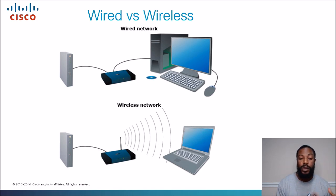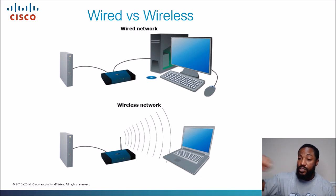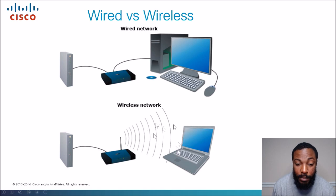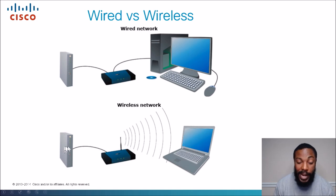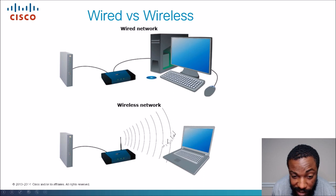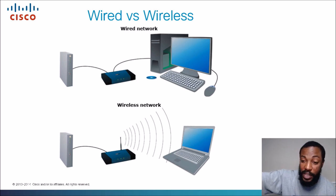A wired network has all of the data passed through physical cables, wires, and Ethernet. In wireless, all of the data is traveling through electromagnetic signals or radio waves. But remember, behind every wireless network is a wire. So when you're on a wireless device, eventually you'll get onto a wire. But these wireless radio waves are traveling through free space, which leaves your information susceptible to being intercepted, eavesdropped, or basically hacked.